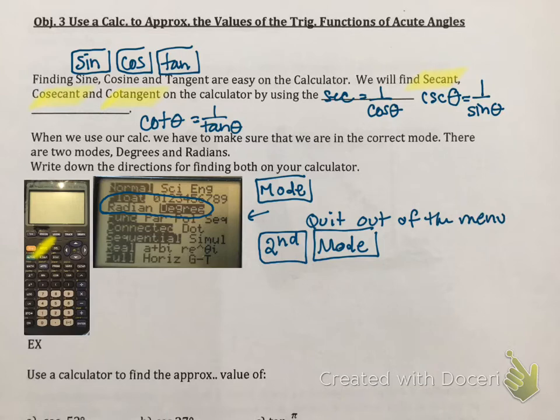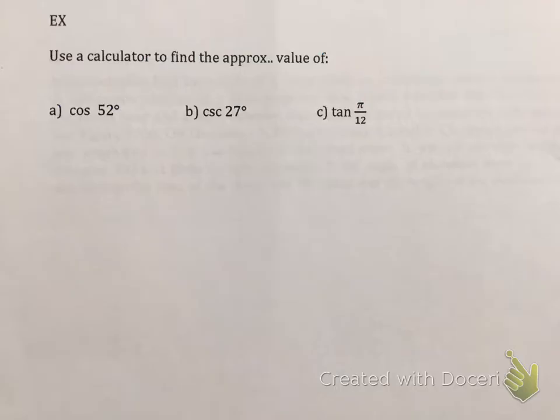Now let's go ahead and do the next problem. Use the calculator to find the approximate value of cosine of 52 degrees. Before I do this, I need to have my mode in degrees. So go ahead and turn on your calculator. Click on the mode key. Make sure it's in degrees. Once it is, you hit second mode to quit out of it. And then you take and put in the cosine key. Click on it. Put in 52. And then hit enter. And when I do that, I get 0.6157. I'm rounding to this place value right here.